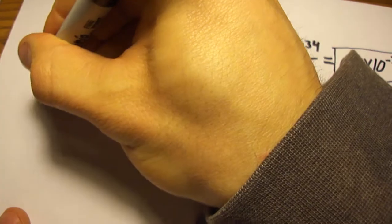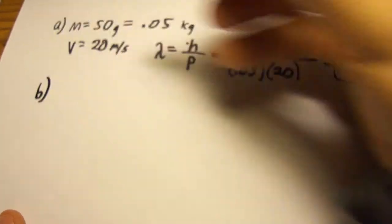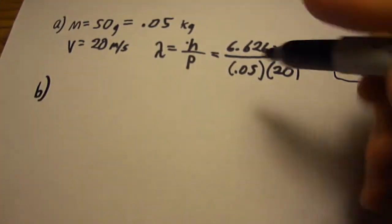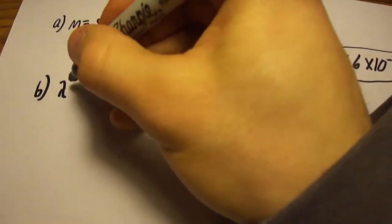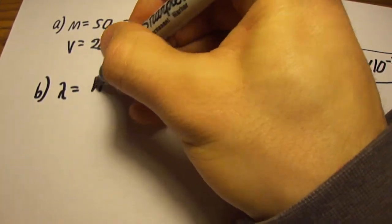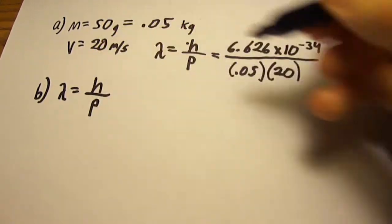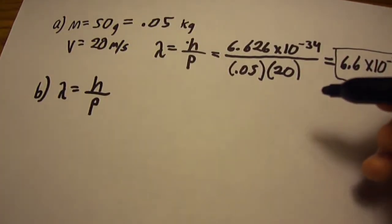In part B, we're asked to find the de Broglie wavelength again, which we know to be Planck's constant over momentum.